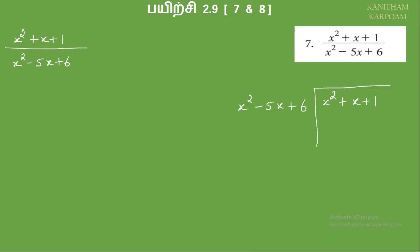If we divide this by 1, what do we get? The full expression x squared minus 5x plus 6 — we know this. So we change the sign: plus minus minus, all plus. The plus minus cancel, and we get 6x minus 5.